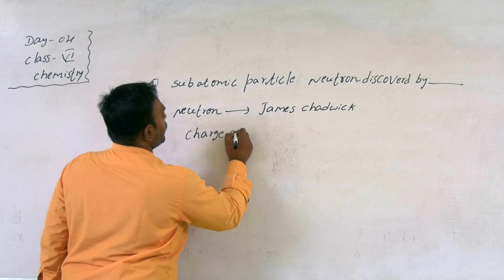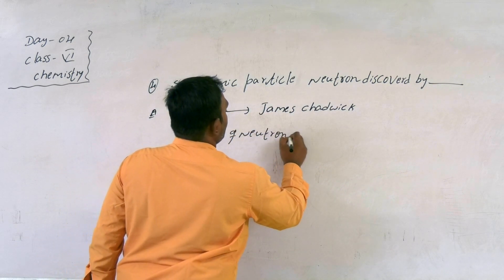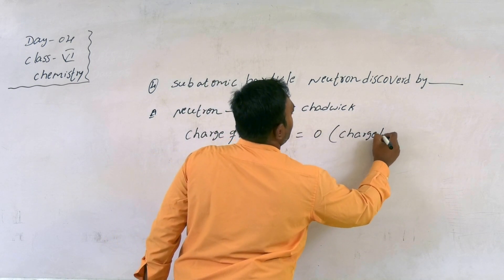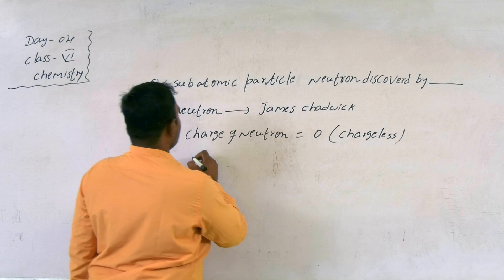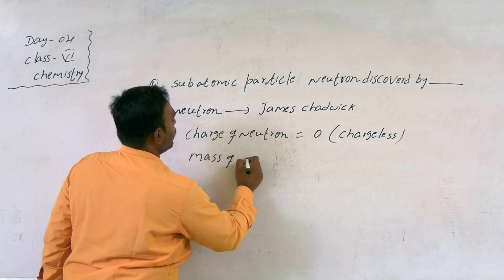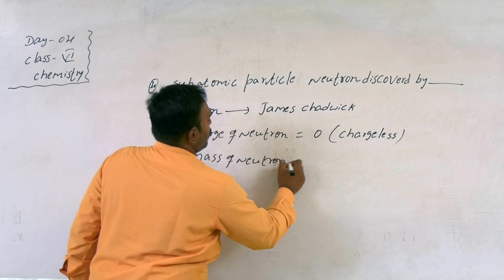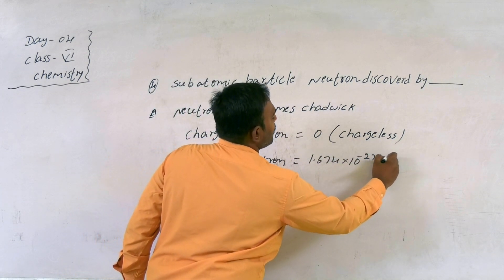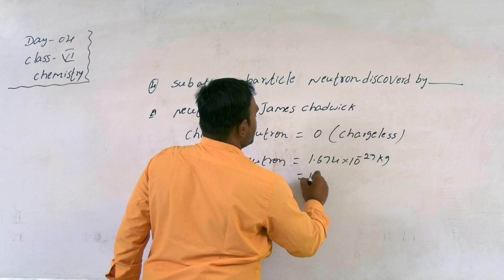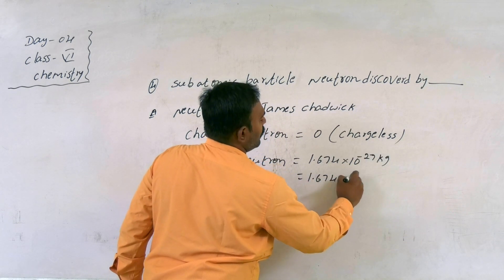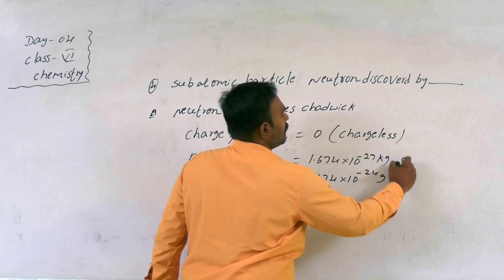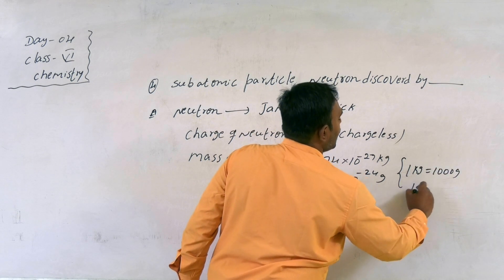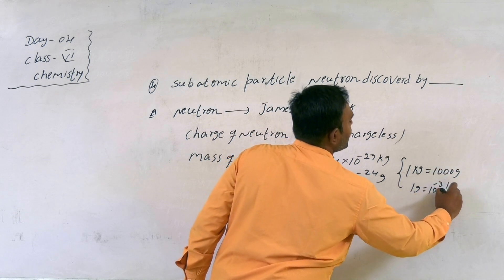Charge of the neutron: the charge equals zero — it is a chargeless particle. Coming to the mass of the neutron: 1.674 into 10 to the power minus 27 kilograms, or 1.674 into 10 to the power minus 24 grams. We know that 1 kg is equal to 1000 grams, and 1 gram is equal to 10 to the power minus 3 kilograms.